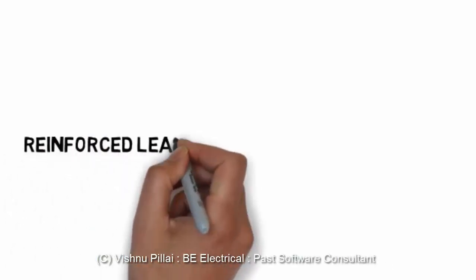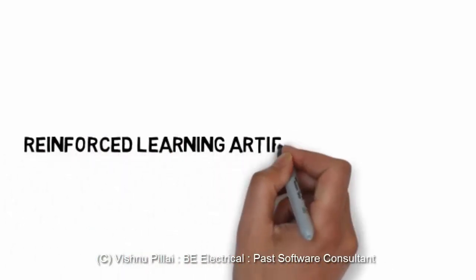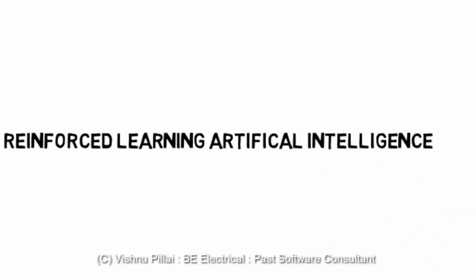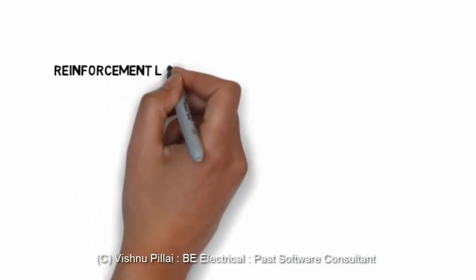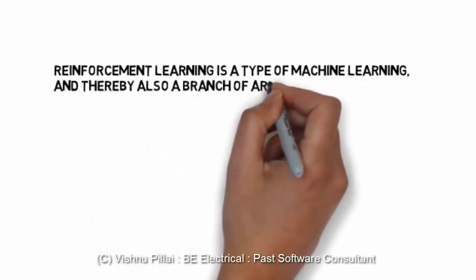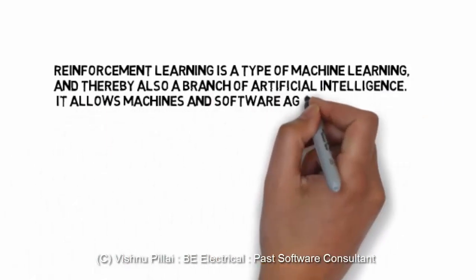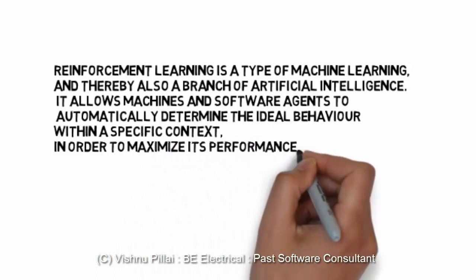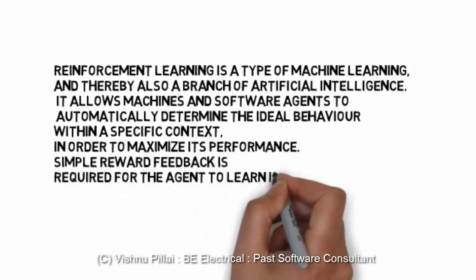The next kind of learning is reinforcement learning. So what you have seen so far is structured learning, unstructured learning, semi-structured learning, and the final kind of learning which we are going to see in this series is reinforcement learning. Reinforcement is a type of learning for machine learning and thereby also a branch of artificial intelligence.